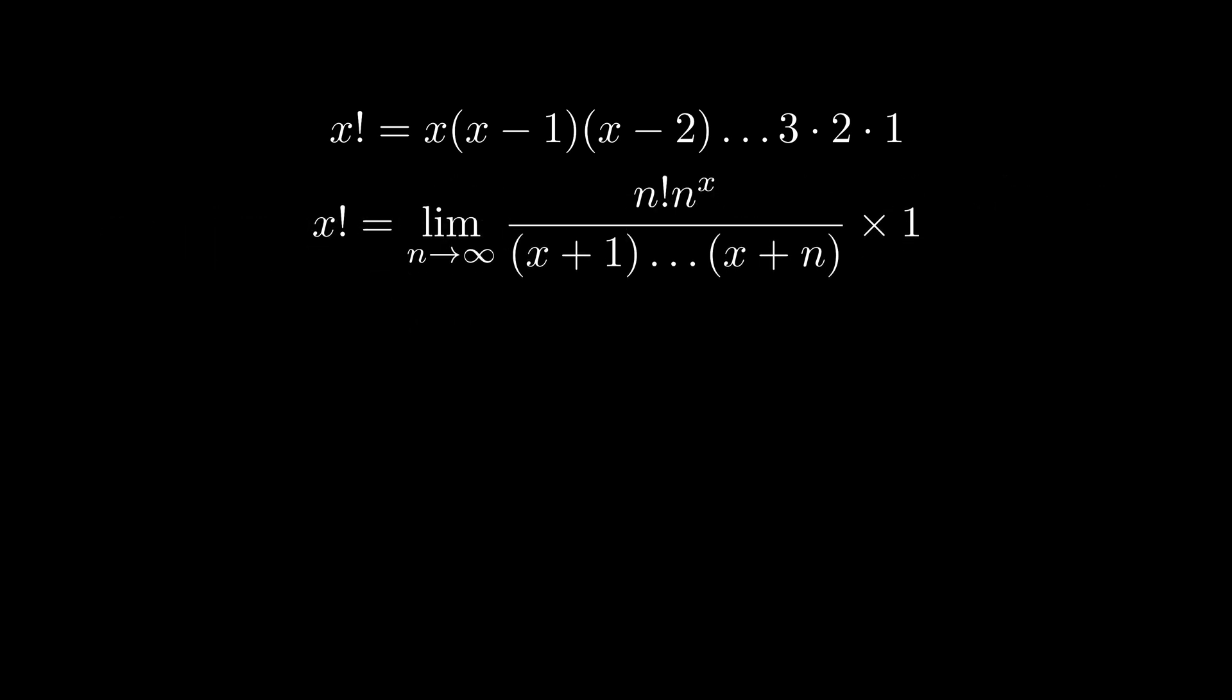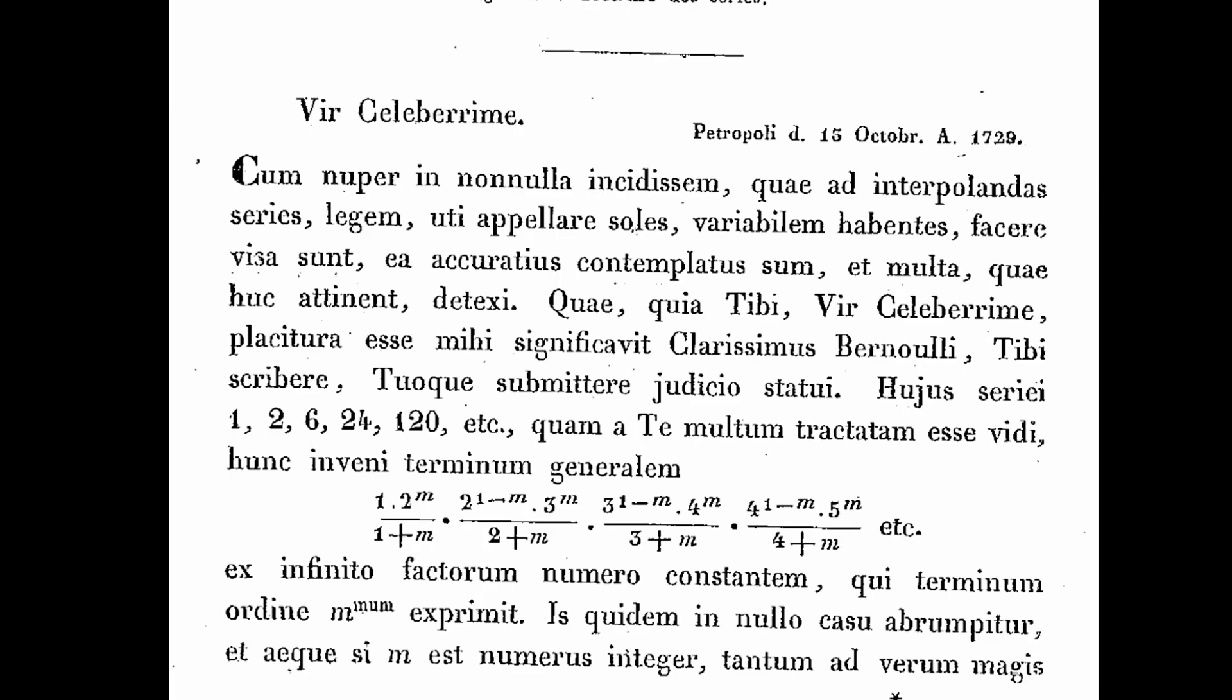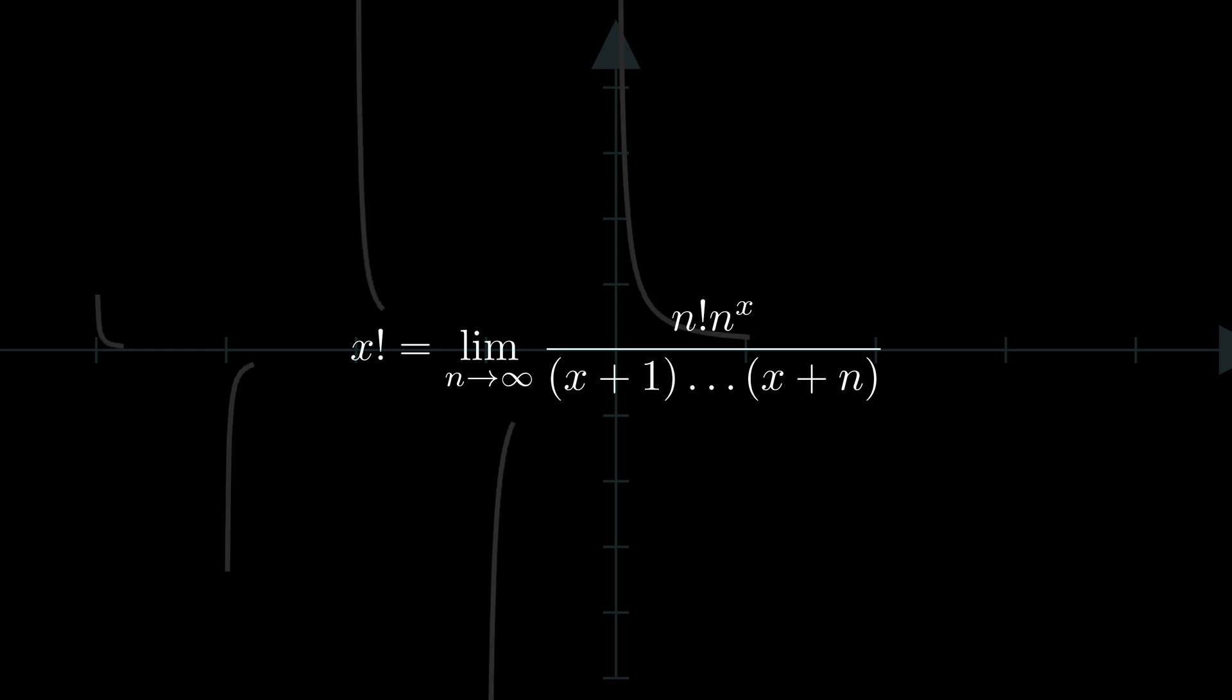And we arrived at the Euler's product formula for the gamma function. Euler derived this formula about 300 years ago in a letter to Goldbach. It is crystal clear that because n goes to infinity all negative integers are out of the domain. The beauty of this formula is that x doesn't have to be an integer anymore.